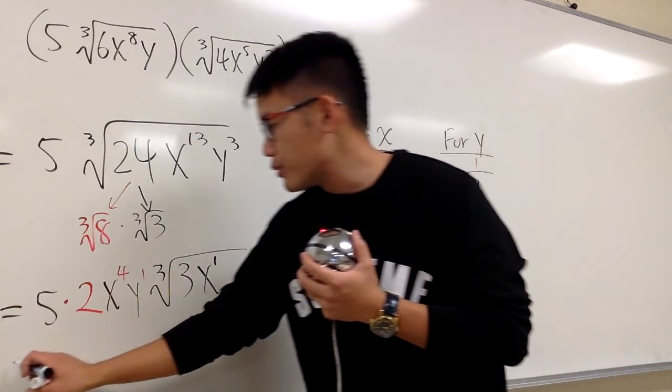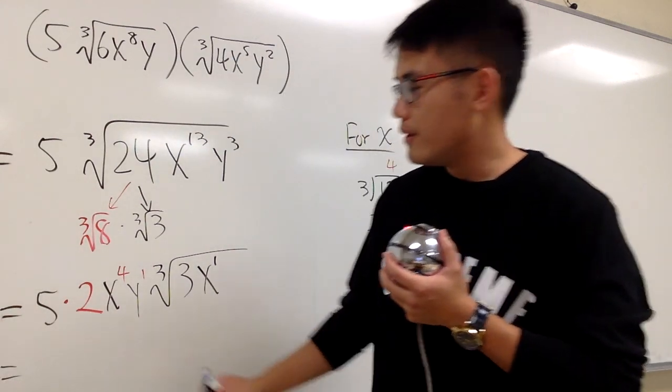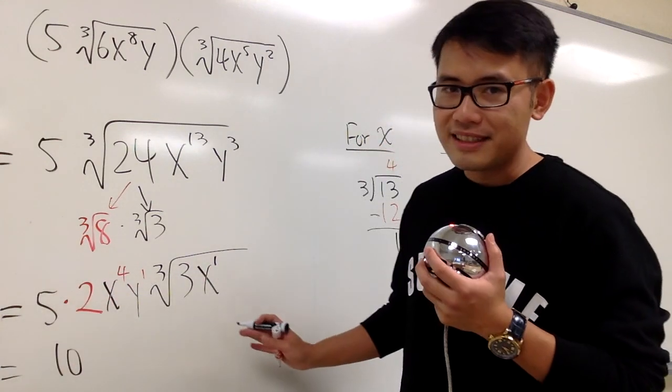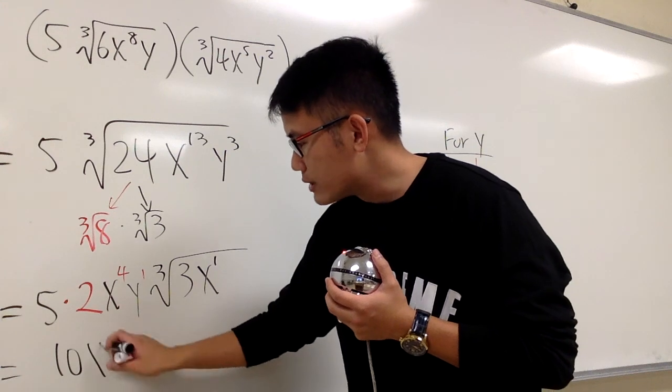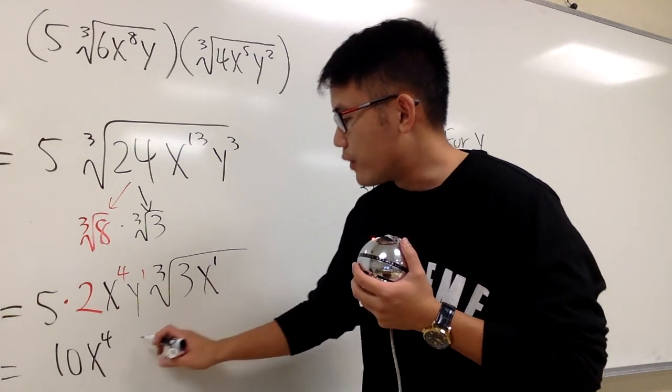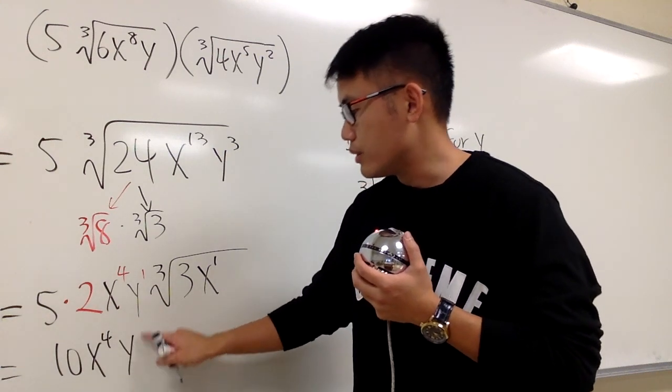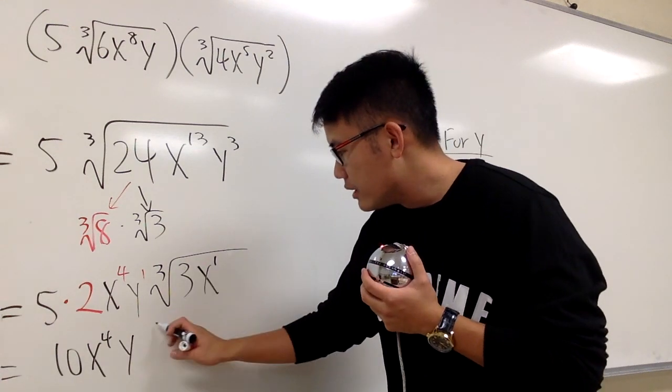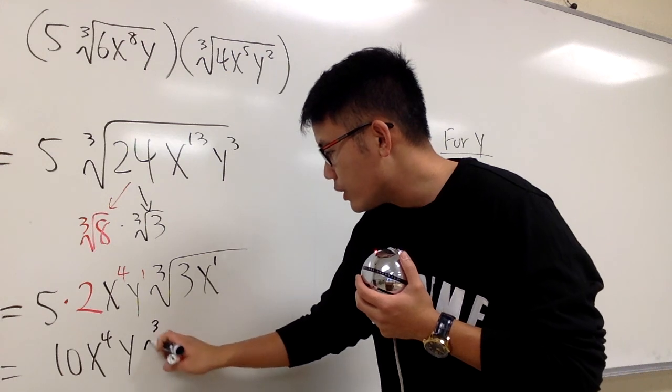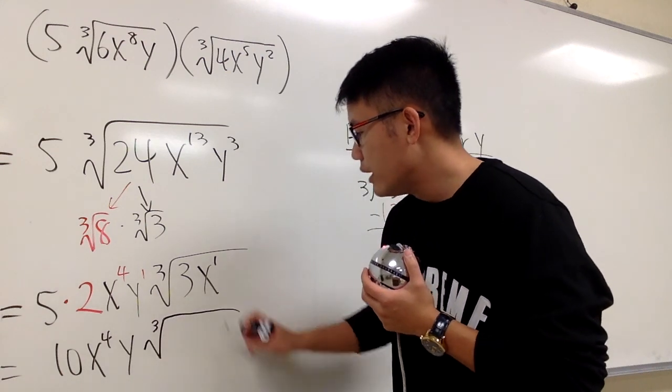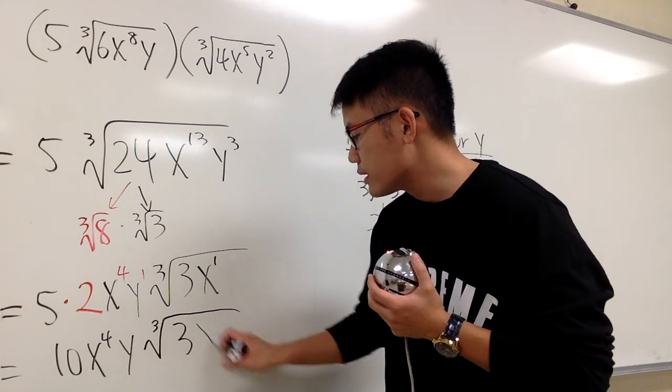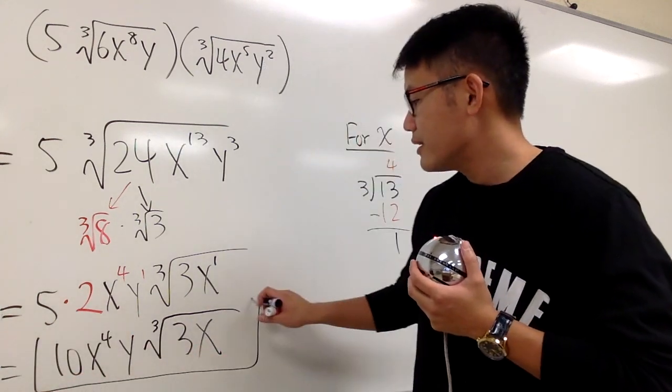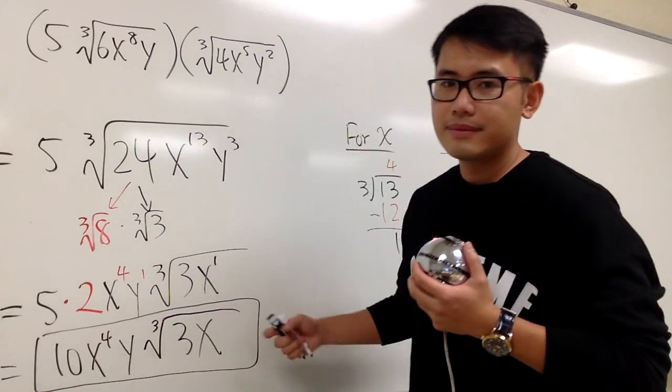At the very end, I'm just going to clear things up. I can do 5 times 2, which is 10. Let's write this down nicely. We have x to the 4th power, y to the 1st. For the cube root, write it down nicely. The little 3 is right here with the radical symbol. Inside we have 3x to the 1st. This right here is the answer.